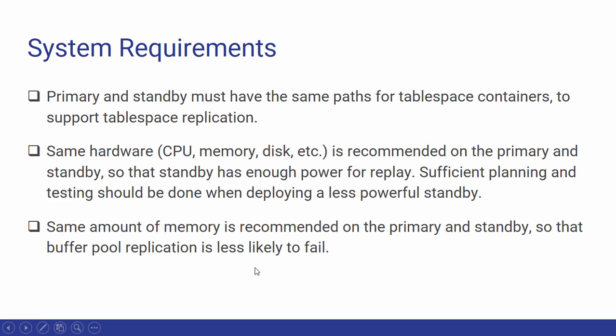The same hardware is also recommended on the primary and standby so that the standby has enough power for replay. You can have a less powerful standby machine since it is only used during a switchover, but you should test and plan sufficiently, as the standby may not be able to handle the load of the primary. It is recommended to have the same amount of CPU, memory, and disk space on both machines. Similarly, the same amount of memory is recommended so that buffer pool replication is less likely to fail.